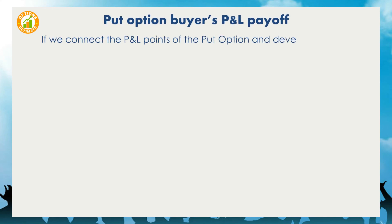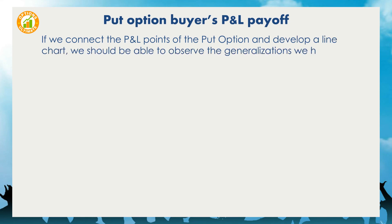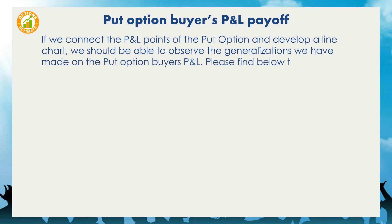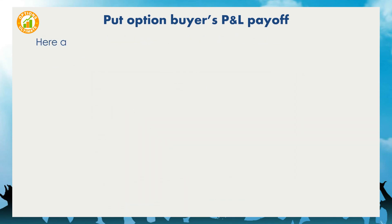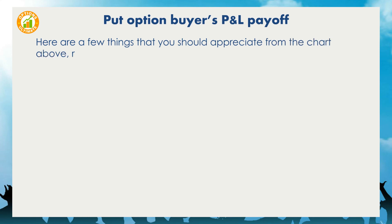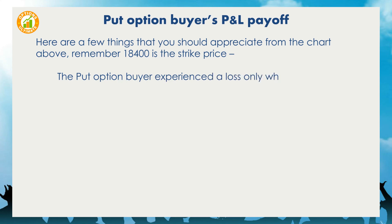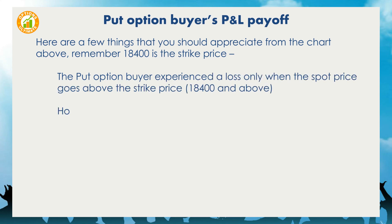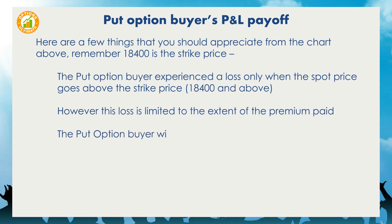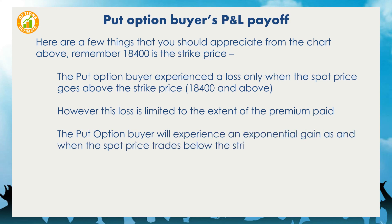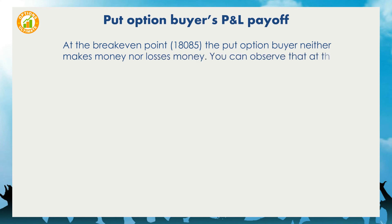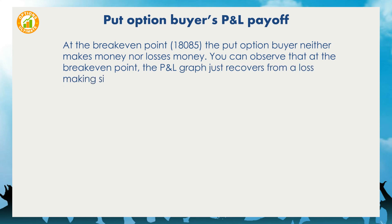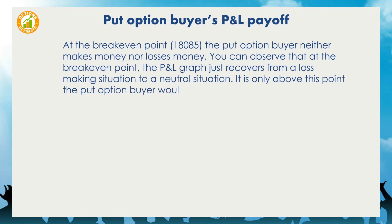If we connect the P&L points of the put option and develop a line chart, we can observe the generalizations made on the put option buyer's P&L. From the chart: the put option buyer experiences a loss only when the spot price goes above the strike price of 18,400, but this loss is limited to the extent of the premium paid. The put option buyer experiences exponential gains as and when the spot price trades below the strike price — the gains can be potentially unlimited. At the break-even point of 18,085, the put option buyer neither makes money nor loses money; it is only below this point that the buyer starts to make money.